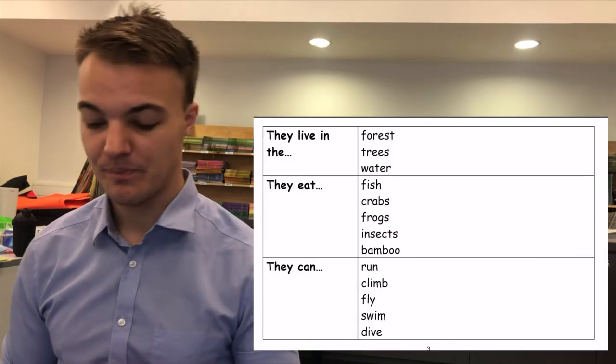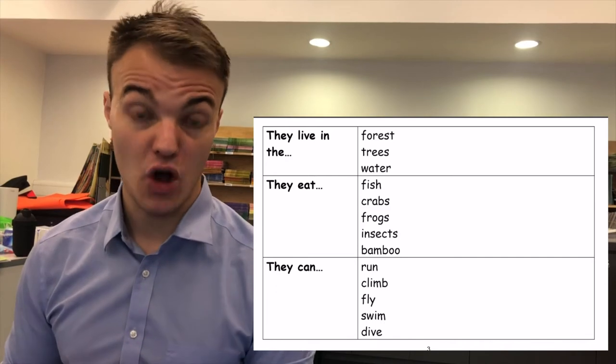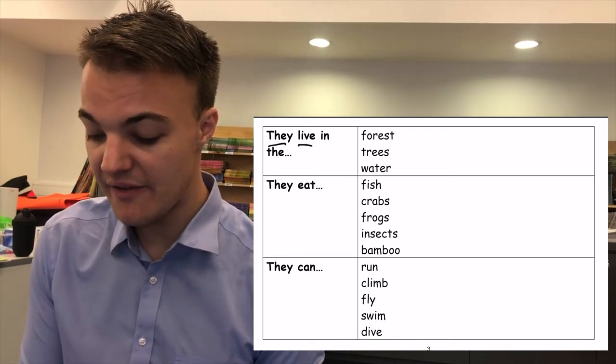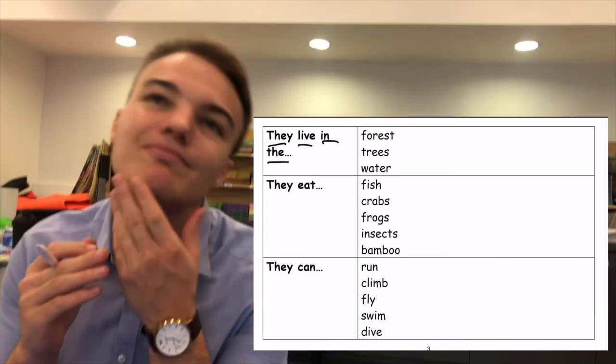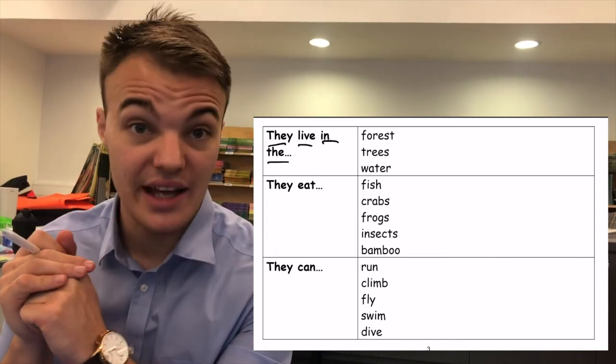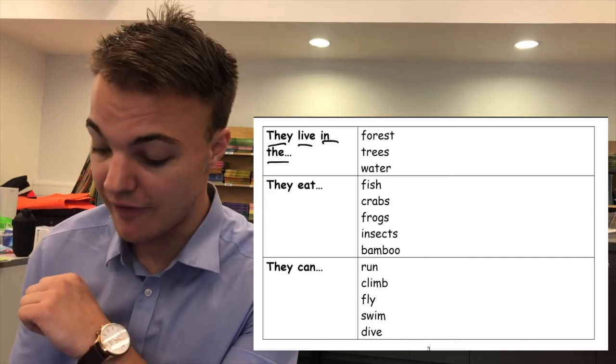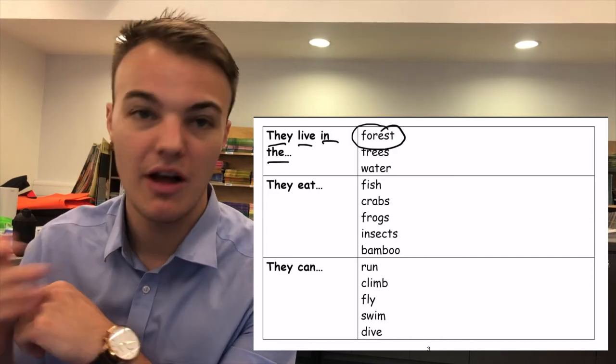Now I can look at the next part of the word bank here. Okay, the first box says they live in the. Where do lions live? I think lions live in the forest. So I will circle forest.